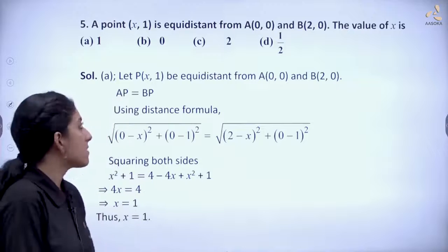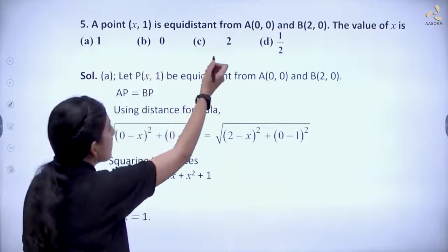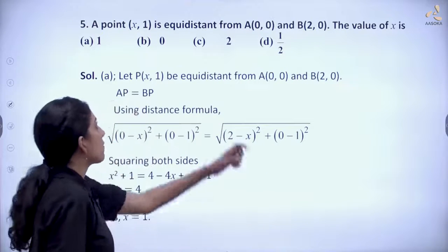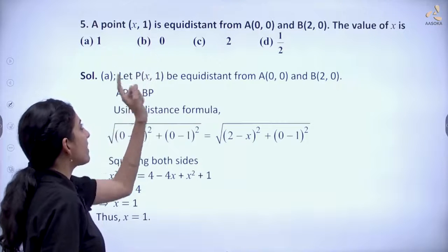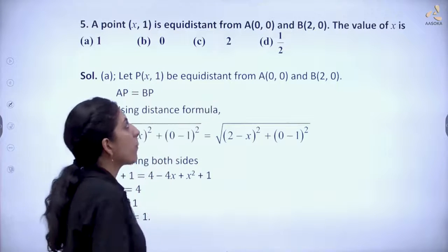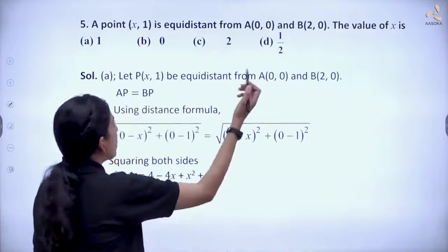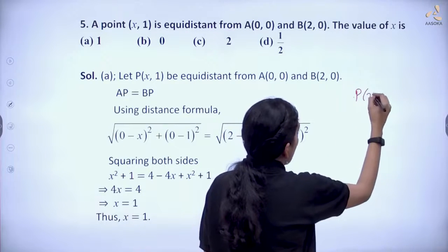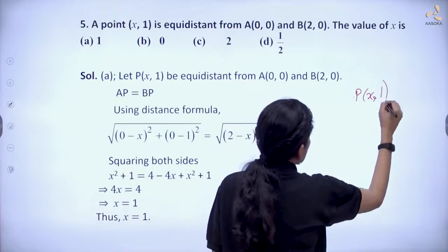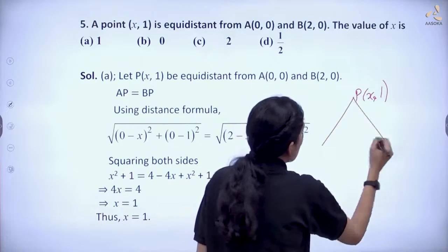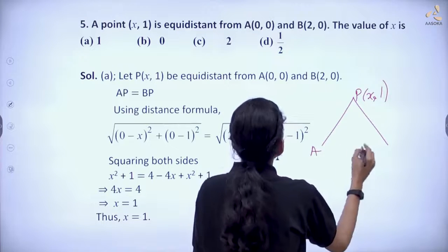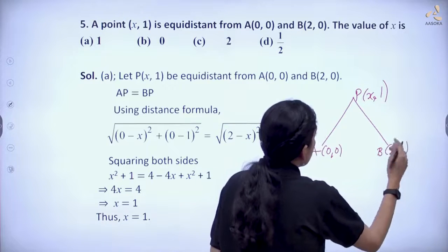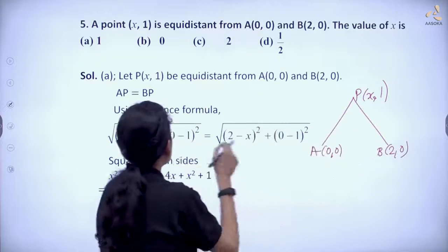Now have a look at the fifth question: a point P(x, 1) is equidistant from A(0, 0) and B(2, 0). The value of x is? So here we are given point P(x, 1) which is equidistant from A(0, 0) and B(2, 0). Equidistant means its distance from both points is equal, that means AP is equal to BP.